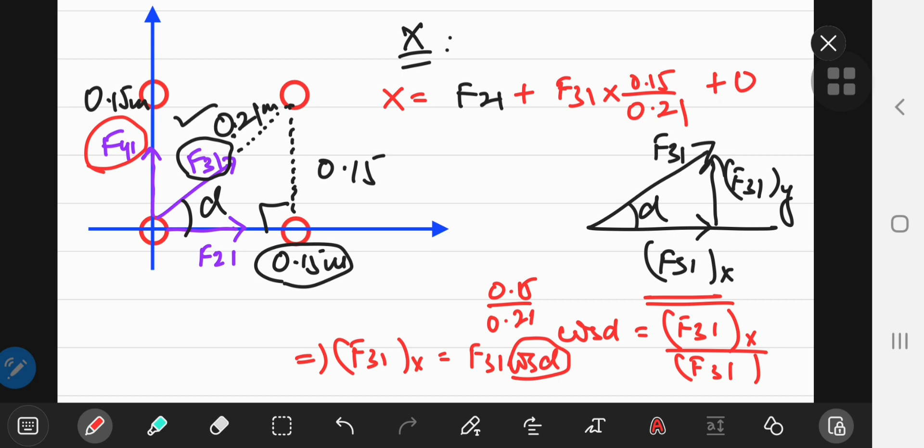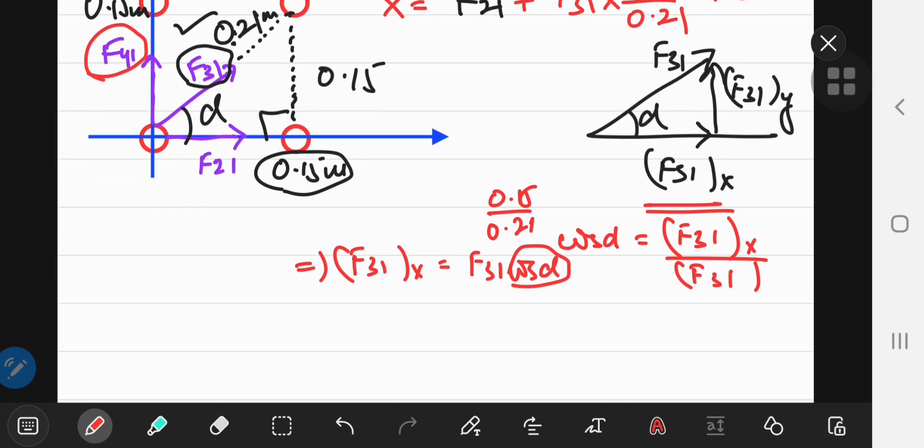Now to plug in the values and get some numbers in. So F sub 2, 1, it's a gravitational force, right? So it's going to be equal to the constant g times the product of masses.